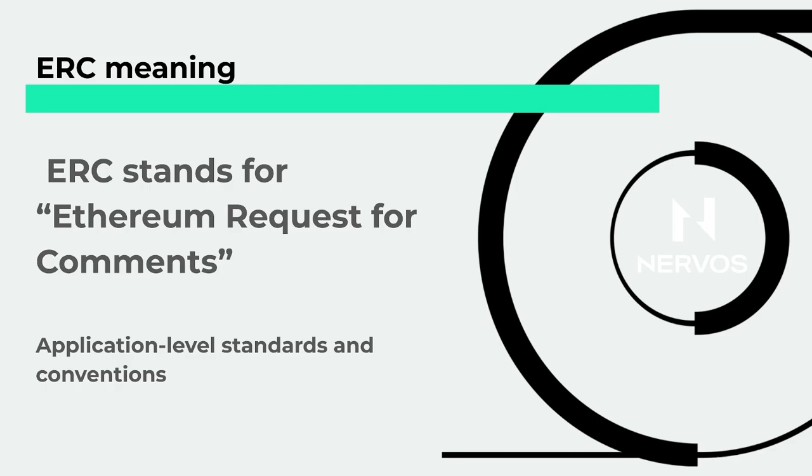These ERCs — Ethereum Request for Comments — are just standards that were accepted by the wide Ethereum community, and they are recommended to be used if you are building applications. In Ethereum, ERCs are mostly used for application-level standards and conventions. The ERC is a subset of Ethereum Improvement Proposals, which are called EIPs. EIPs also have many other categories, like proposals that improve networking or the protocol.